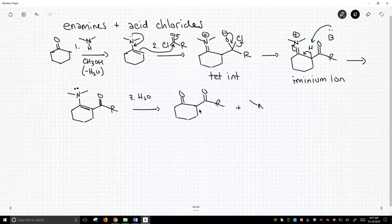And not to forget it, but we do get our secondary amine back that we put in in the first step. So this is a pathway to make what they call 1,3-diketones.